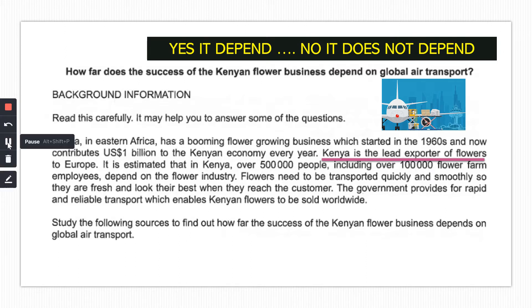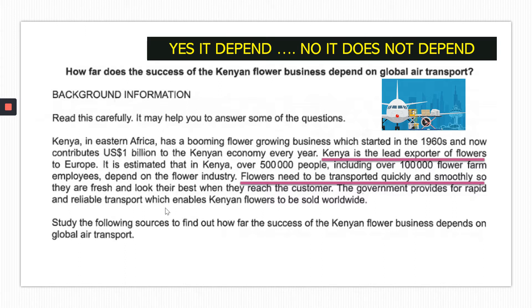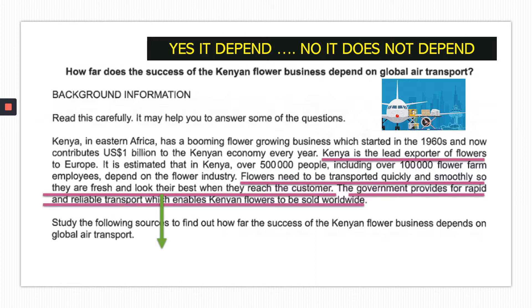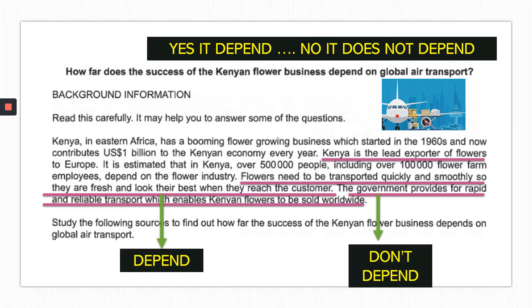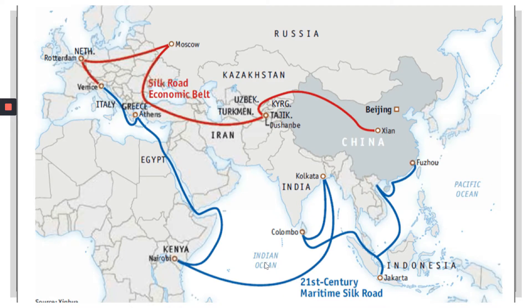You can see from the background that it is a very big industry, and the government is investing a lot of money to ensure the flower industry is thriving. One of the main ways flowers are transported is by planes, predominantly to Europe, which is the biggest buyer of Kenyan flowers. The flowers travel all the way from Kenya to Europe and other parts of the world.